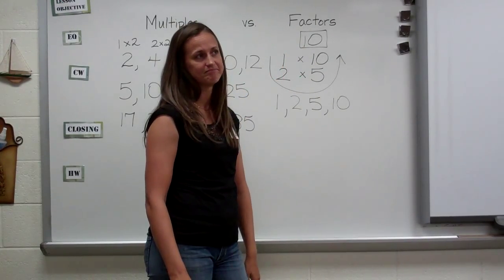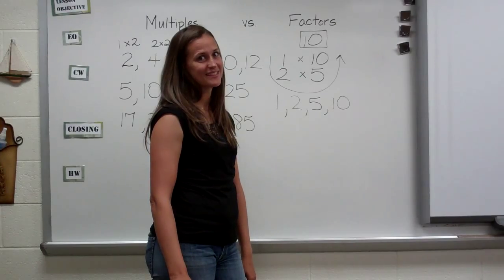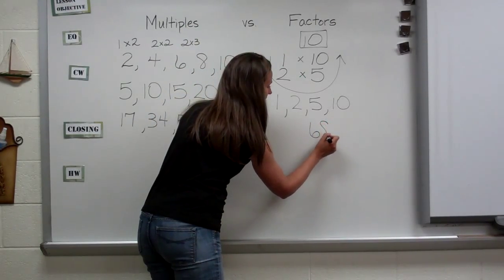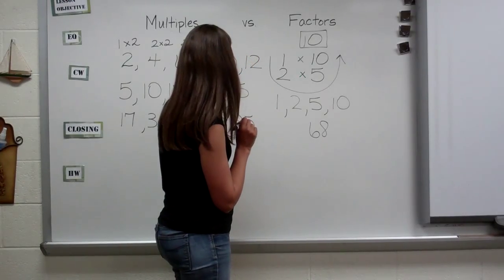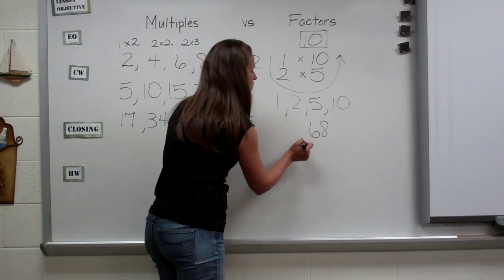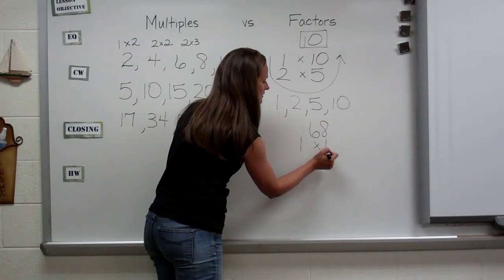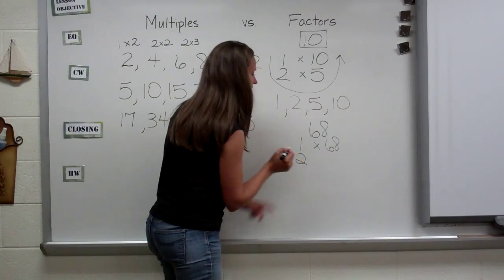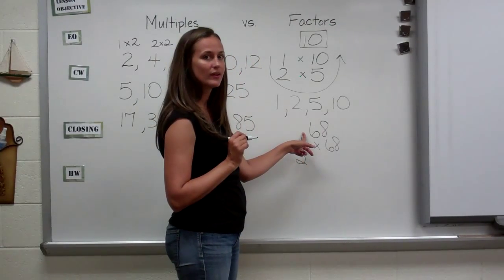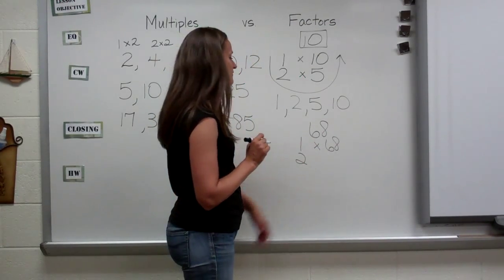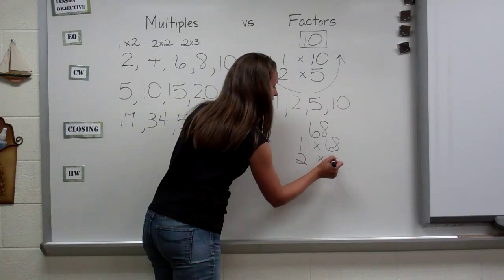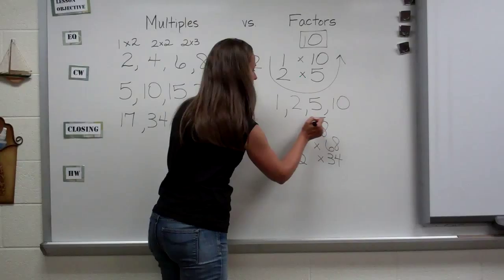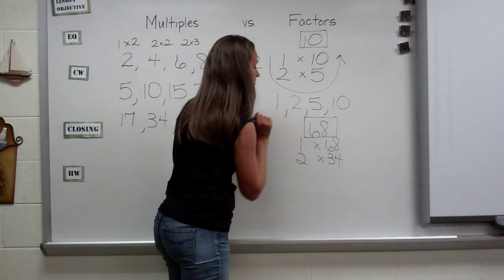Let's try another one — what about 68? I'm going to start with one: one times 68. What about two? Is 68 an even number? Sure is, so it can be divided by two: two times 34 gives you 68. I'm going to box this number so we know we're focused on 68.